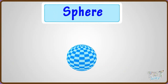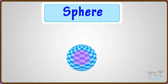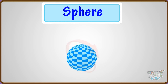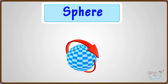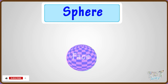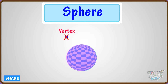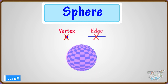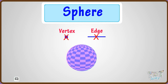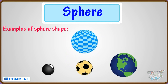Sphere. A sphere is a perfectly round and circular 3D shape that resembles the shape of a completely round ball. It has only one face which is spherical, and it has no vertex and edge. These are a few objects spherical in shape.